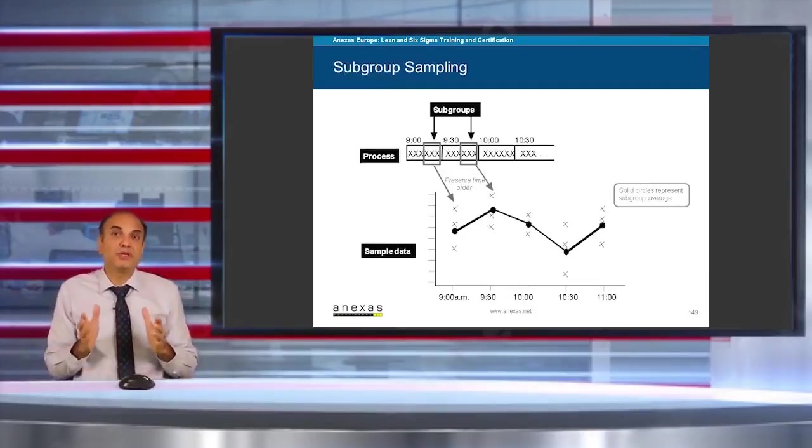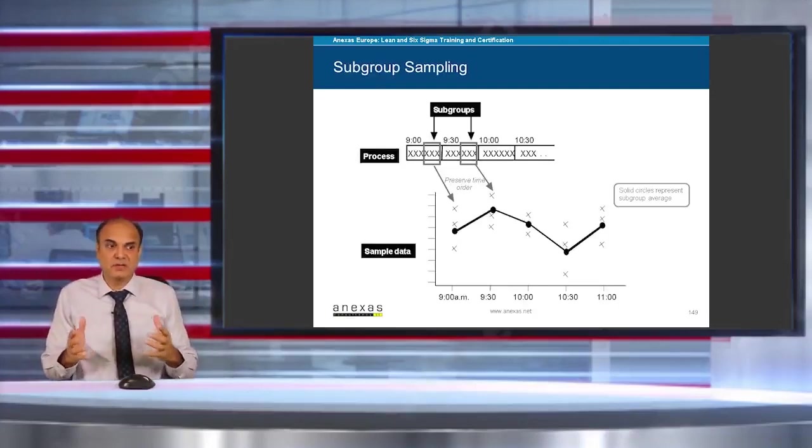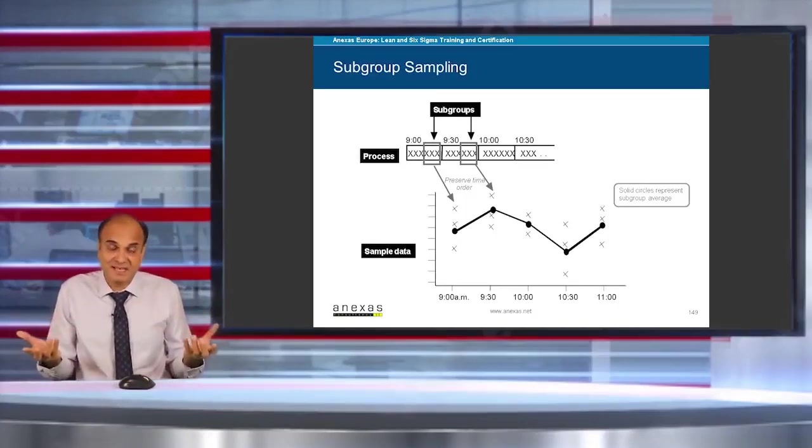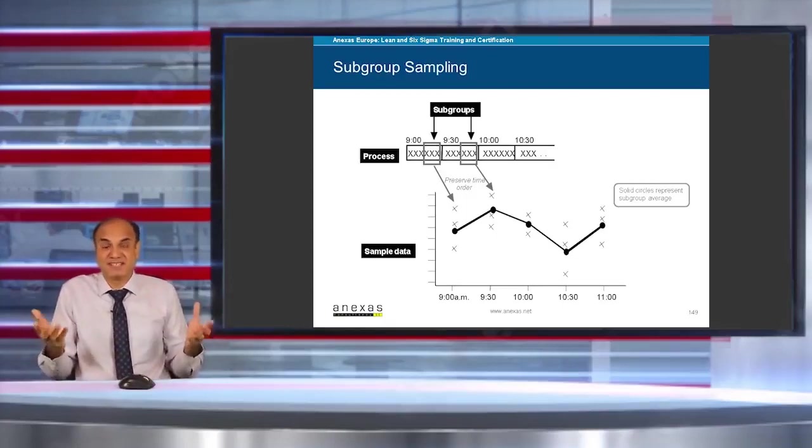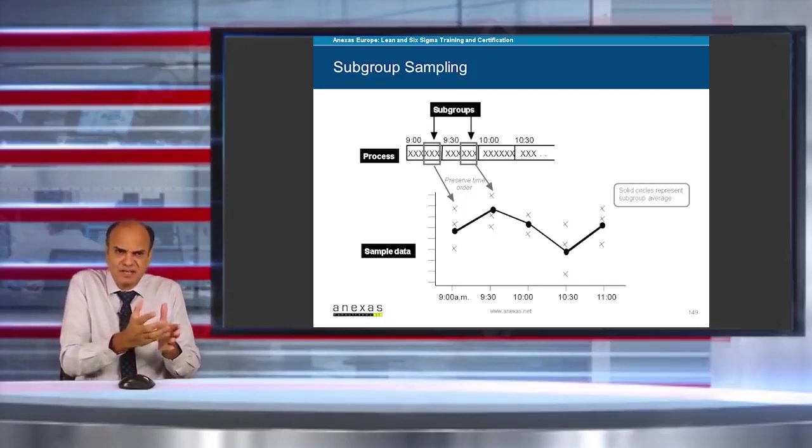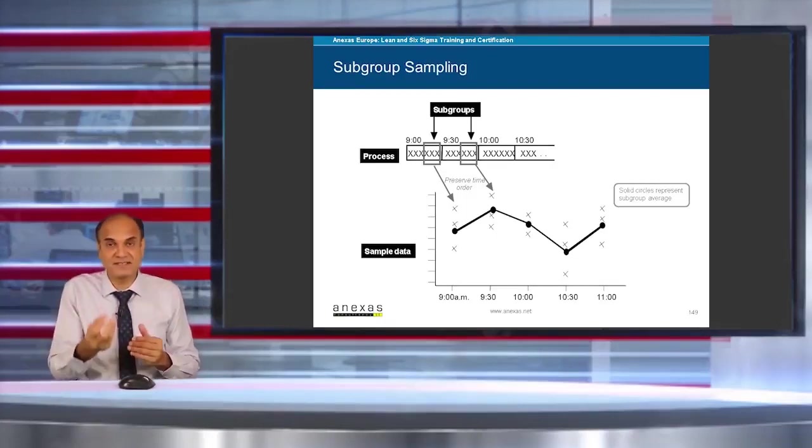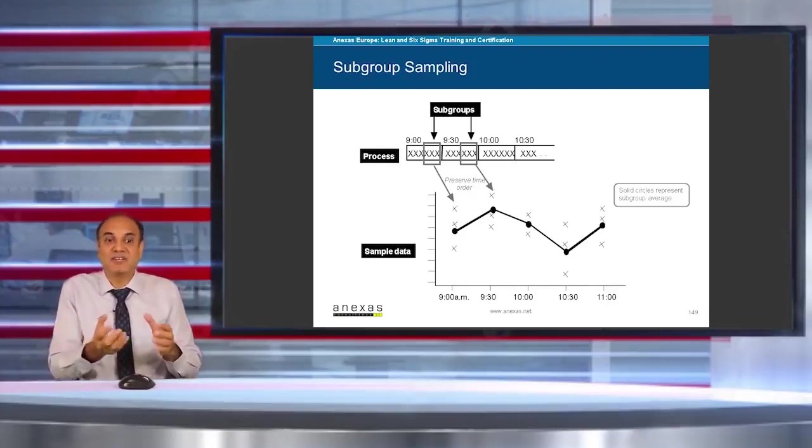Subgroup sampling is usually used when you have something produced in bulk or are processing something in bulk. For example, you're producing chocolates. Let's say you're producing 10,000 chocolates per hour. So at 8 a.m., you will collect five chocolates, and let's say you are interested in measuring the weight of the chocolates. So you would collect five samples, so here the subgroup size is five.